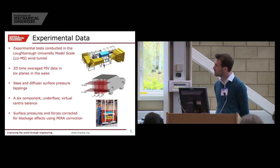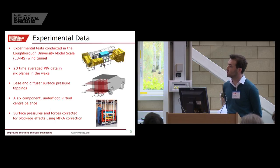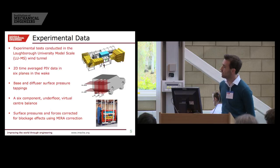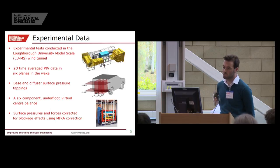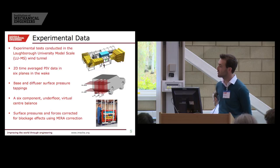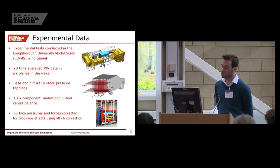The experimental data was obtained in the Loughborough University Model Scale wind tunnel. There was 2D time-average PIV data in six planes in the wake — three vertical and two horizontal planes, as seen on the right-hand side. Base and diffuser surface pressures were obtained from tappings in the model, and also aerodynamic forces and moments from a six-component underfloor balance. This has generated a vast array of experimental data, and what's presented today is only a subset of that. All surface pressures and forces were corrected for blockage using the standard Meyer correction, maintained in the computational results as well.